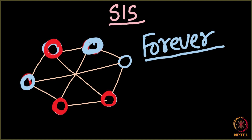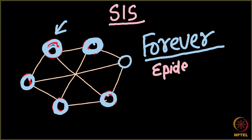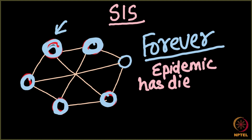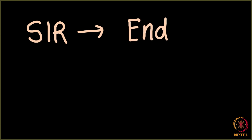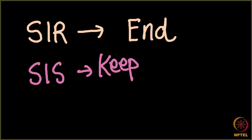But once it does stop — suppose the remaining nodes have recovered and the last infected node is unable to infect any other node, so it also turns susceptible — in this case the epidemic or contagion has died forever. To summarize: the SIR model will definitely come to an end, but the SIS model can keep running forever.